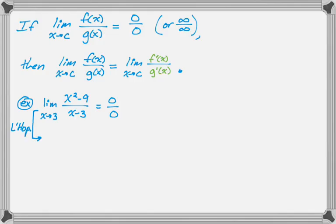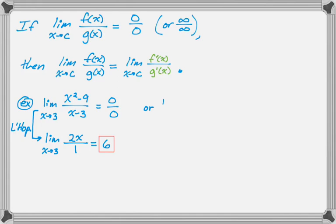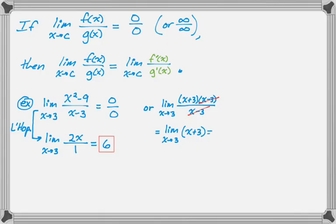I make a little notation here to indicate I'm using L'Hôpital's Rule. It's still the limit as x approaches 3 — never forget to write the limit. As long as you're writing an x, you need to write the limit. The derivative of the top function is just 2x, divided by the derivative of the bottom, which is just 1. Now I re-evaluate: I get 2 times 3, which is 6. The alternative method is to factor and cancel, giving the limit as x approaches 3 of just x + 3, which is also 6.